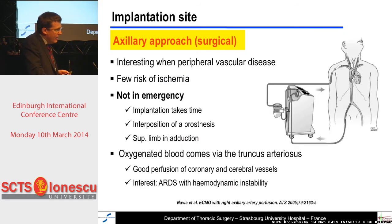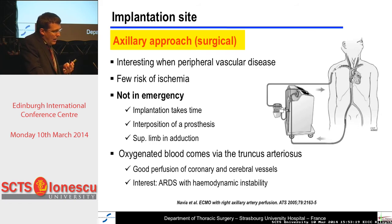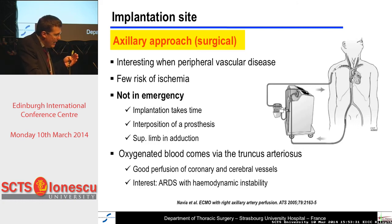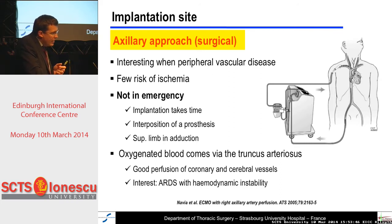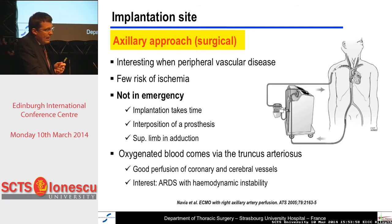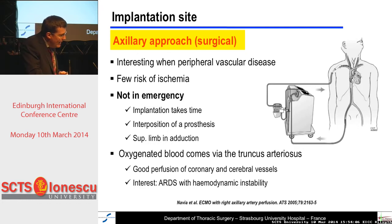Another interesting approach is the axillary approach, which is all the more interesting when your patient has peripheral vascular disease. It is said that there are few risks of ischemia of the upper limb. Importantly, it is not implanted in high emergency because the implantation takes time — you have to interpose a prosthesis most of the time between the axillary artery and your cannula. What makes it original is that the oxygenated blood comes via the truncus arteriosus, providing good perfusion of the coronary and cerebral vessels. For some authors, this is very interesting in cases of ARDS with hemodynamic instability.